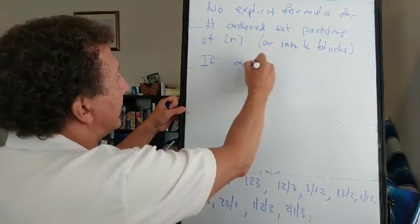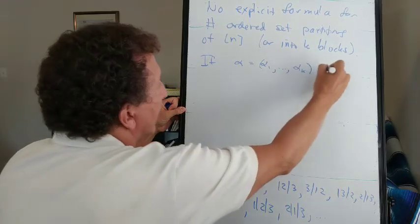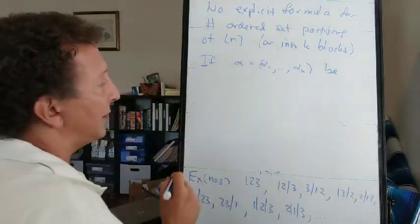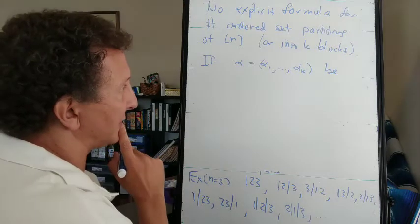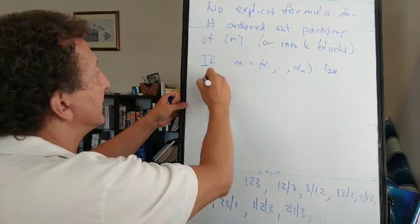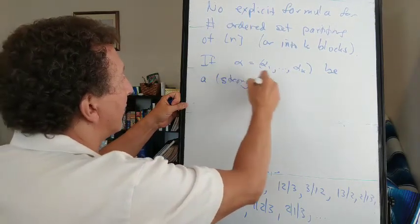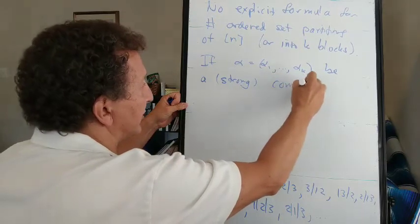So let's let alpha be, with k components, be a set composition of n, sorry, a strong composition of n. Also called just a composition of n.